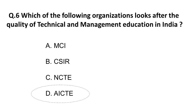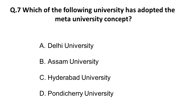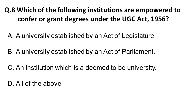Next question: which of the following universities has adopted the meta university concept? This is a new concept where you are not bound to a particular curriculum — it is a mix of a credit system where you can have courses from liberal arts and sciences. Options are Delhi University, Assam University, Hyderabad University, and Pondicherry University. Delhi University has adopted the meta university concept, and in future the majority of universities will adopt it according to the HRD Ministry.